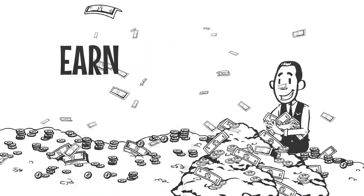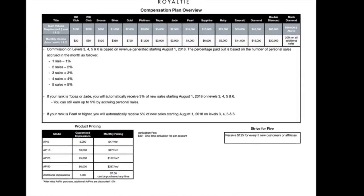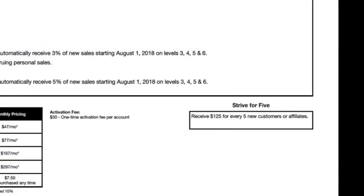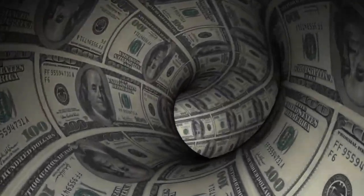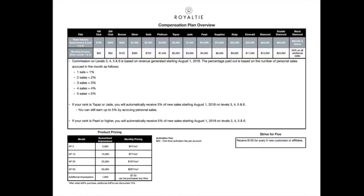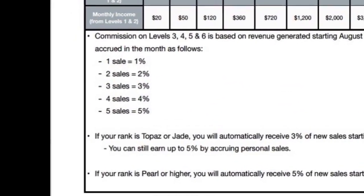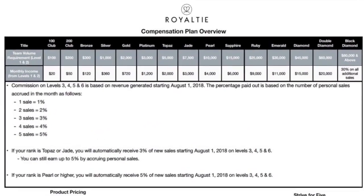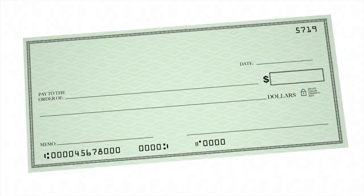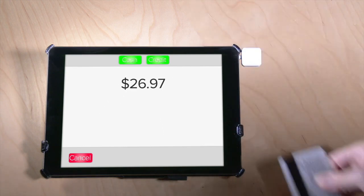Did you know that Royalty has a lucrative affiliate and compensation plan which pays out almost 40%? Earn a $125 fast start bonus for every five customers you refer to Royalty. Earn a monthly residual income as you build your team through sales. Get paid down six levels, up to 5% of total team volume and revenue. Royalty pays out the 15th of every month directly to your Royalty-provided debit card, which you can use anywhere Visa is accepted.